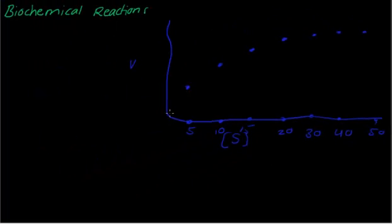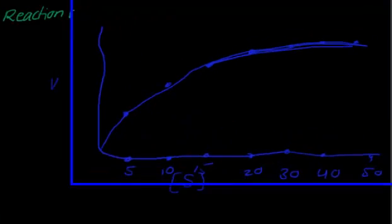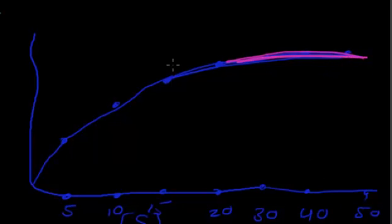So from here, up to a certain concentration of substrate, the velocity will increase until the velocity reaches a level where it will not be able to increase further. This steady state level in velocity — even if you increase the substrate concentrations, you will not be able to increase the velocity. We call this Vmax.